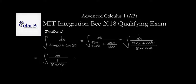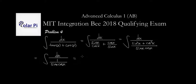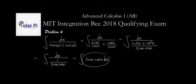And it's pretty easy to see that this can be changed into the integral of 1 over sine x times cosine x dx. Looking at this, it's easy to see that we can do u-substitution.